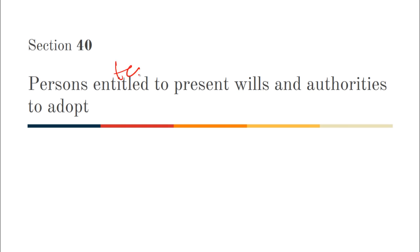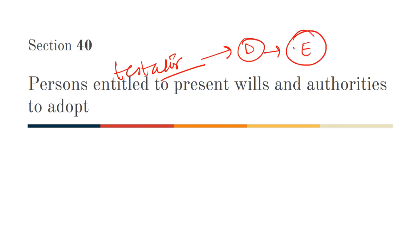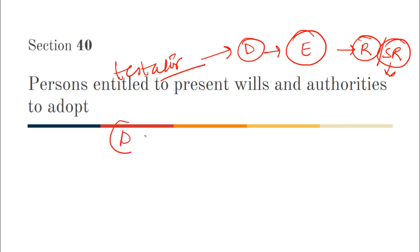Section 40 covers persons entitled to present wills and authorities to adopt. The testator — the person who makes the will — or after his death, his executor, can present the will to any registrar or sub-registrar for registration. For authority to adopt, the donor can present it, and after the donor's death, the donee can present it. The adoptive son can also present the adoption paper to the registrar or sub-registrar.